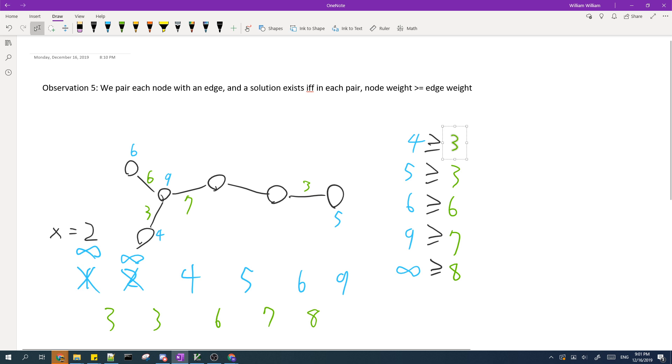So for example, in this case of X equals 2, we have a solution for this given tree and the given set of node weights and edge weights.